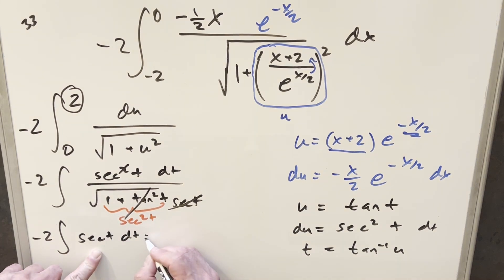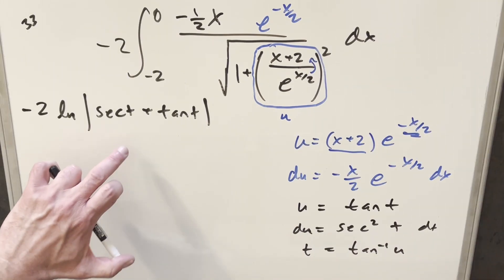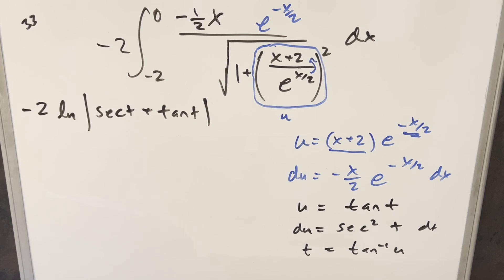For this right here, I'll just use the formula. This is going to be minus 2 natural log absolute value secant t plus tan t. But now from here, we just want to get it back to u because that's what our bounds were from 0 to 2 in u.